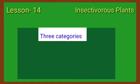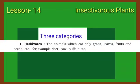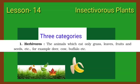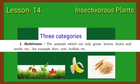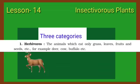Kids, animals are divided into three main categories based on their eating habits. 1. Herbivores — the animals which eat only grass, leaves, fruits, and seeds. For example, deer, cow, buffalo, etc.